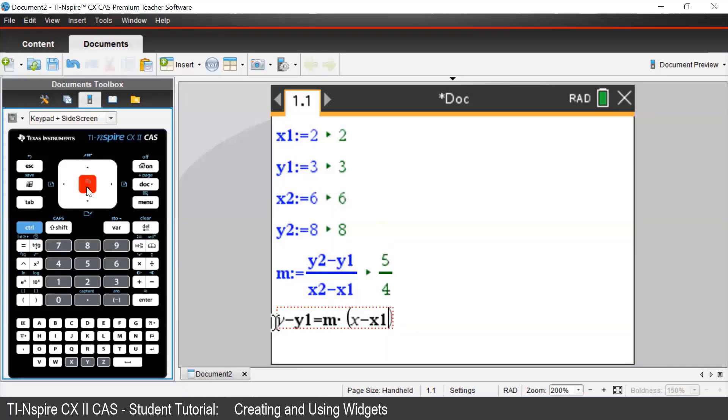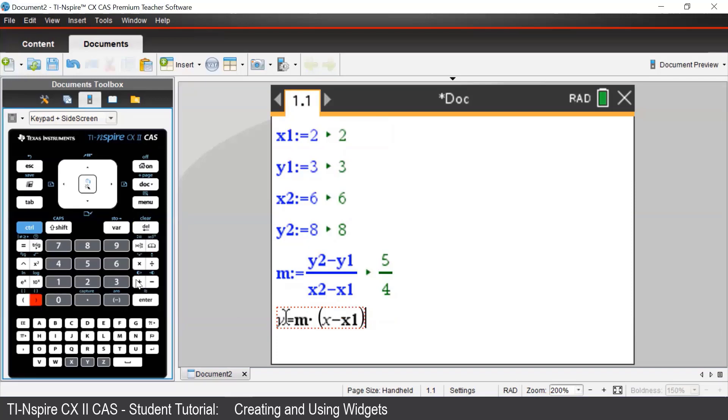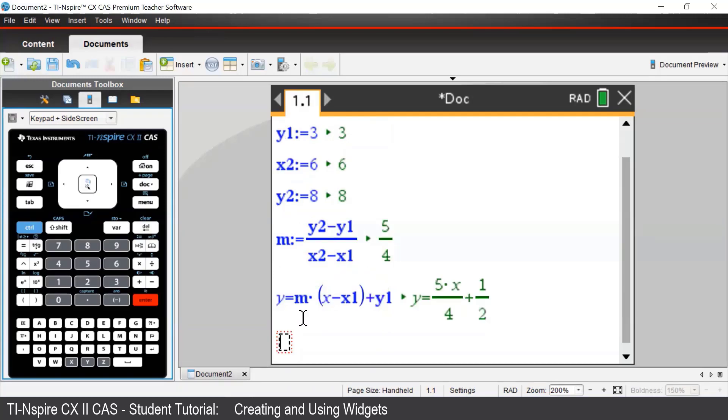We'll slightly modify this formula by adding y1 to both sides and write it as y equal to m times x minus x1 plus y1. Normally we would need to work out the gradient, expand brackets and add like terms. However, by entering it like this in a notes page, we can perform all these calculations in one line.